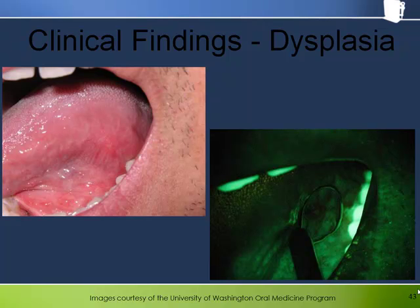Here is an example of a somewhat subtle presentation under white light that was nevertheless not missed by the experts in the oral medicine clinic at the University of Washington. This subtle appearance under white light is contrasted with the dramatic star-like morphology of the lesion when viewed under fluorescence. The fluorescence photograph shows that the lesion did not blanch under diascopic pressure. It's hard to imagine thinking anything other than that this is an abnormal tissue change warranting follow-up. Upon biopsy, dysplasia was found.